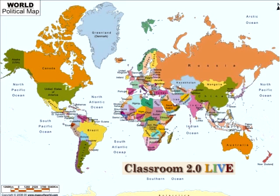Now is the time to find that laser pointer on the left-hand side of your screen and the whiteboard tools. If you want to click on that and show us where you are located in the world, that's great for Heidi to get a sense of where her audience is. Click on the laser pointer and drag it across the world. We have Azerbaijan and Thailand that haven't popped up on the map yet. If you can't get the laser pointer, please just type in the chat where you're from.